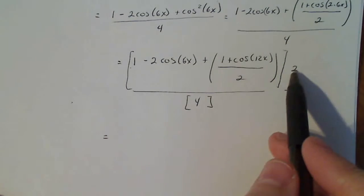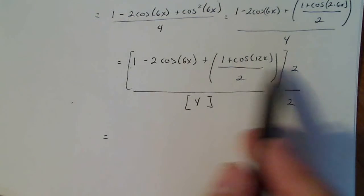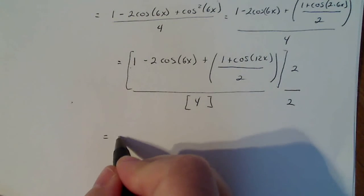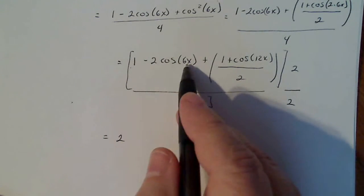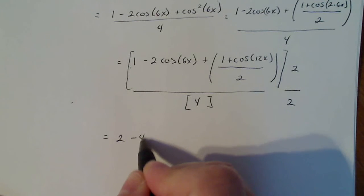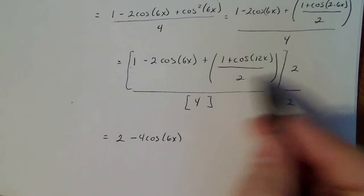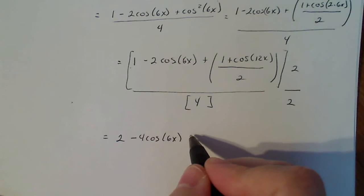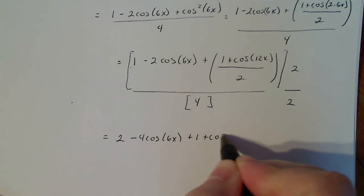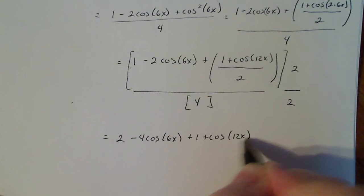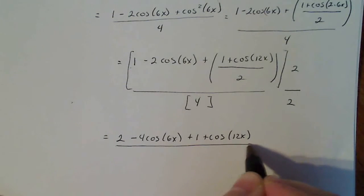So I have to distribute this 2 to every term. So 2 times 1 is 2, 2 times negative 2 cosine 6x is negative 4 cosine 6x. 2 times this guy is supposed to cancel that, so I don't have my complex fraction. So that's plus 1 plus cosine 12x, all divided by 4 times 2, which is 8.